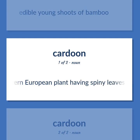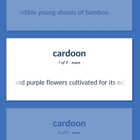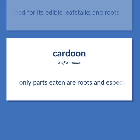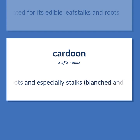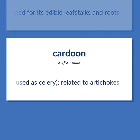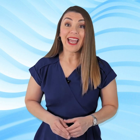Cardoon: A southern European plant having spiny leaves and purple flowers, cultivated for its edible leaf stalks and roots. Only the roots and especially the stalks are eaten, blanched and used as celery. Related to artichokes.